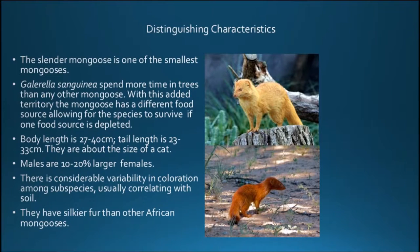The body length is 27 to 40 centimeters and tail length is 23 to 33 centimeters — about the size of an average house cat. Males are dominant, being 10 to 20 percent larger than females. There is considerable variability in coloration amongst subspecies, usually correlating with the soil.